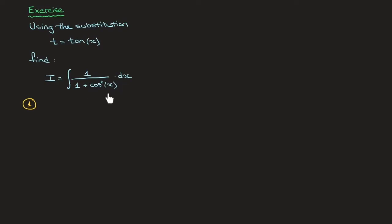For cosine of x and therefore cosine squared of x, we can use right angle trigonometry. I start by drawing a right angle triangle with interior angle x, and I want to make sure that the tangent of x equals t to match our substitution. Since tan of x equals the opposite over the adjacent, the easiest way is to set the opposite side length to t and the adjacent side length to 1, so that tan of x equals t over 1, which equals t.